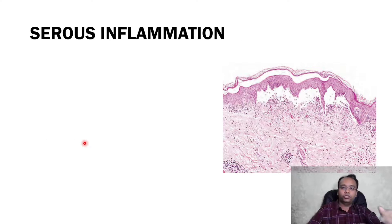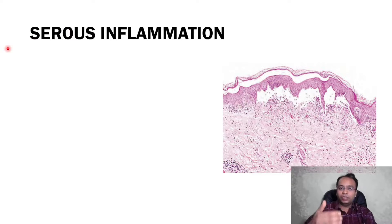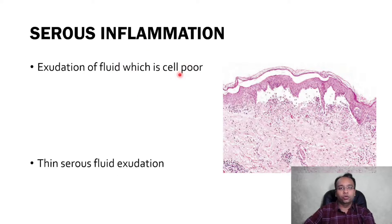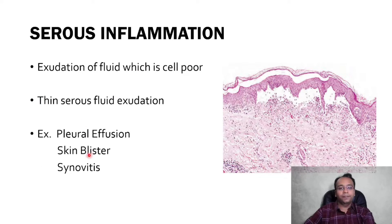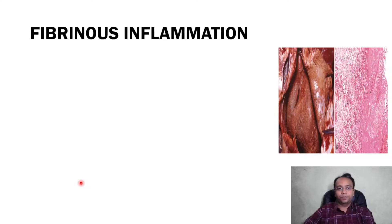The second morphological type is serous inflammation. The name itself suggests that serous fluid secretion is present — that's why the name serous acute inflammation is given. There will be exudation of fluid which is cell-poor; cellularity is very low. It is only a thin serous fluid, like water. Common examples are pleural effusion, skin blister — as shown in this diagram — and synovitis.